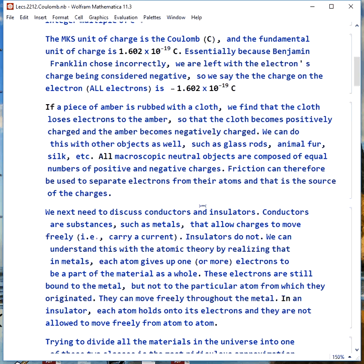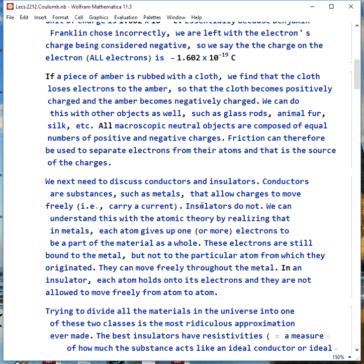If we take a piece of amber and rub it with a cloth, we find that the cloth loses electrons to the amber, so the cloth becomes positively charged and the amber becomes negatively charged. We can do this with other things as well, using glass rods, animal fur, silk. In general, all macroscopic neutral objects are composed of equal numbers of positive and negative charges. We can use friction to separate some electrons from their atoms, and that's what gives us a charge imbalance.